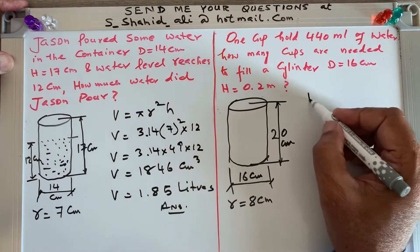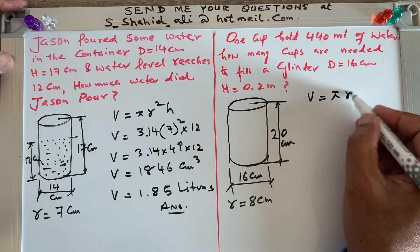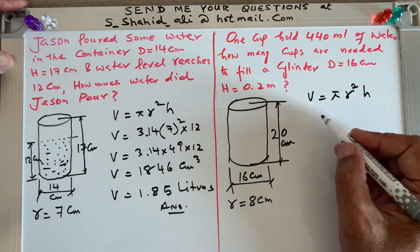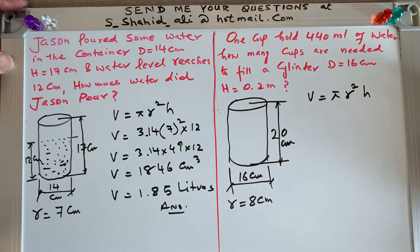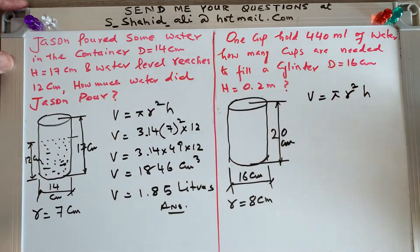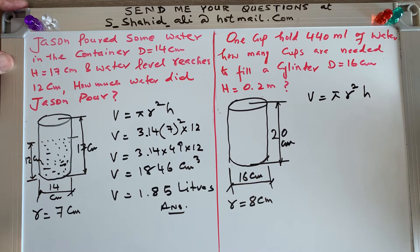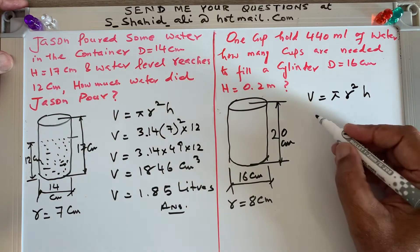The formula remains the same: volume of a cylinder equals π r² h. One cup holds 440 milliliters of water — how many cups are needed to fill the cylinder? We need to find the total capacity of the cylinder and then divide that capacity by 440 milliliters to get how many cups are required.